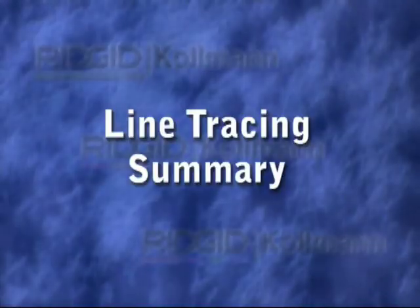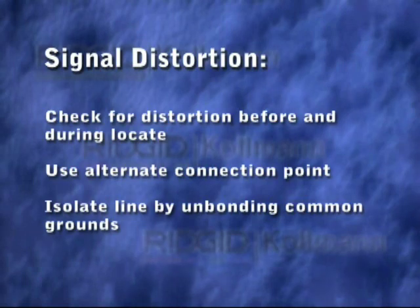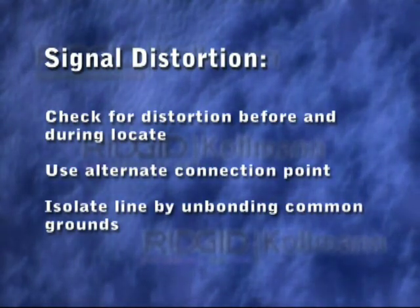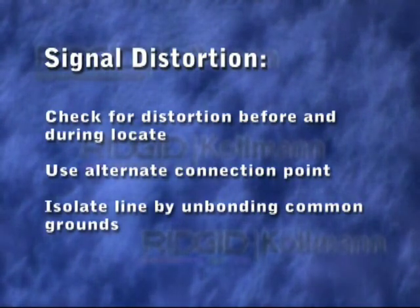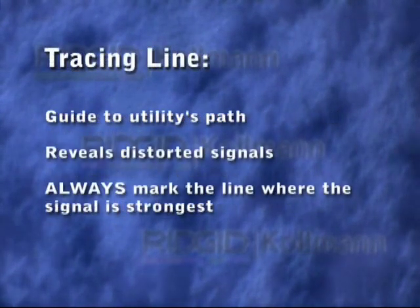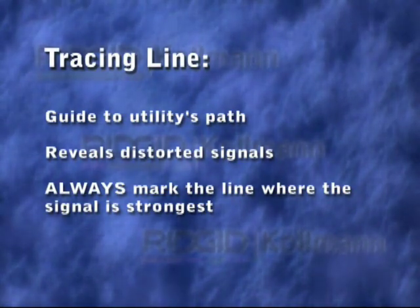Here are some key points to remember when you're tracing a line. Check for signal distortion before and during your locate. If the signal appears to be distorted, you may be able to reduce the distortion by using an alternate connection point, or by isolating its ground from nearby utilities. Use the tracing lines as a guide to help you follow the utility's path, but always mark the line where the signal strength is highest.